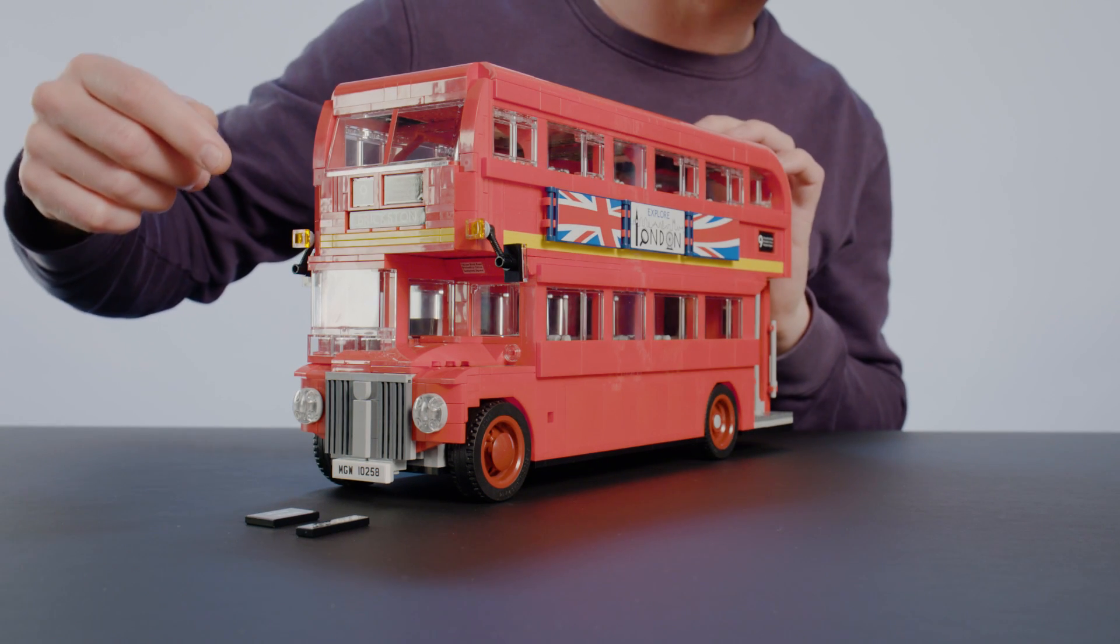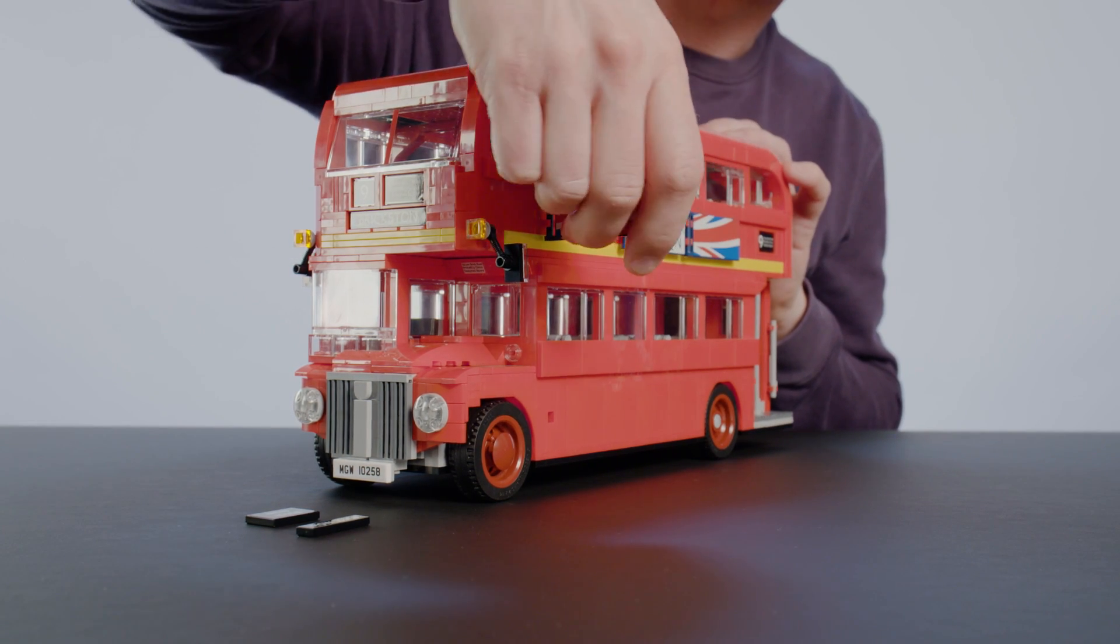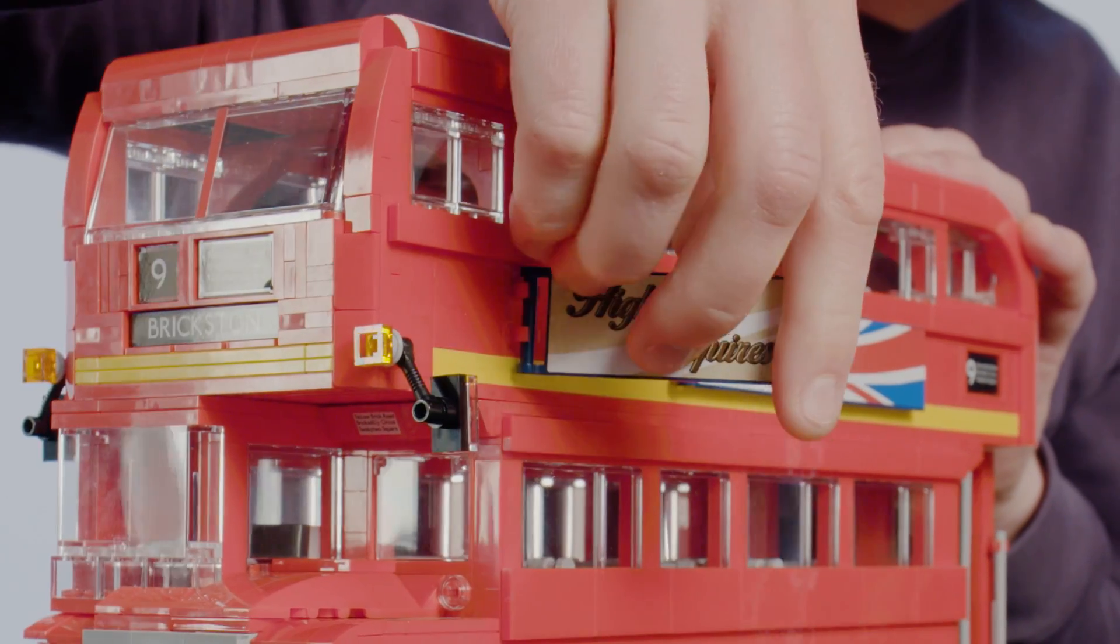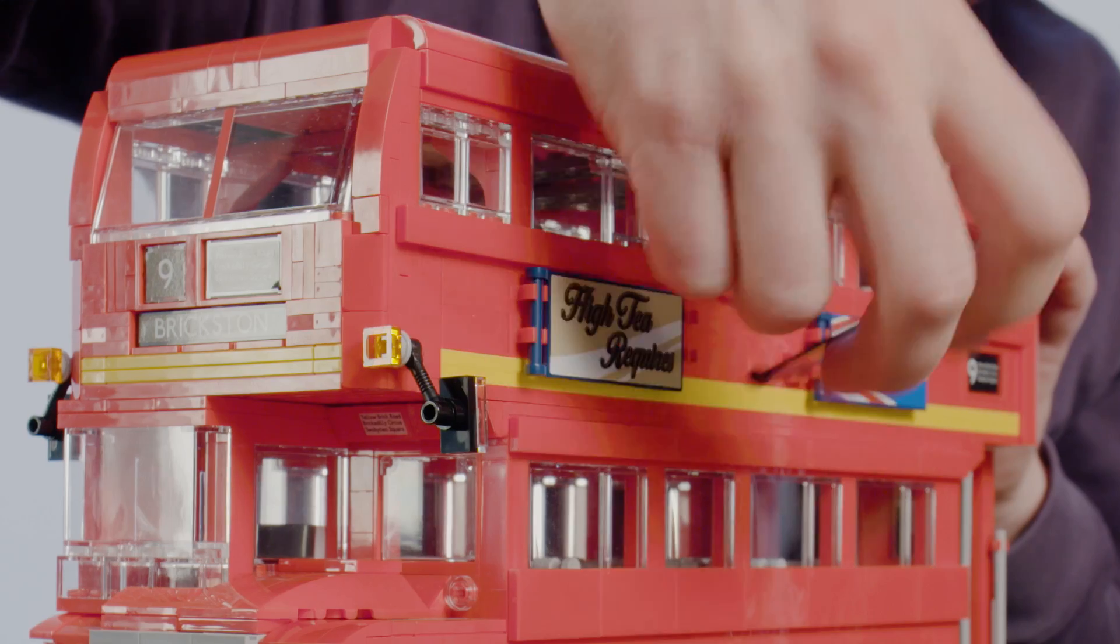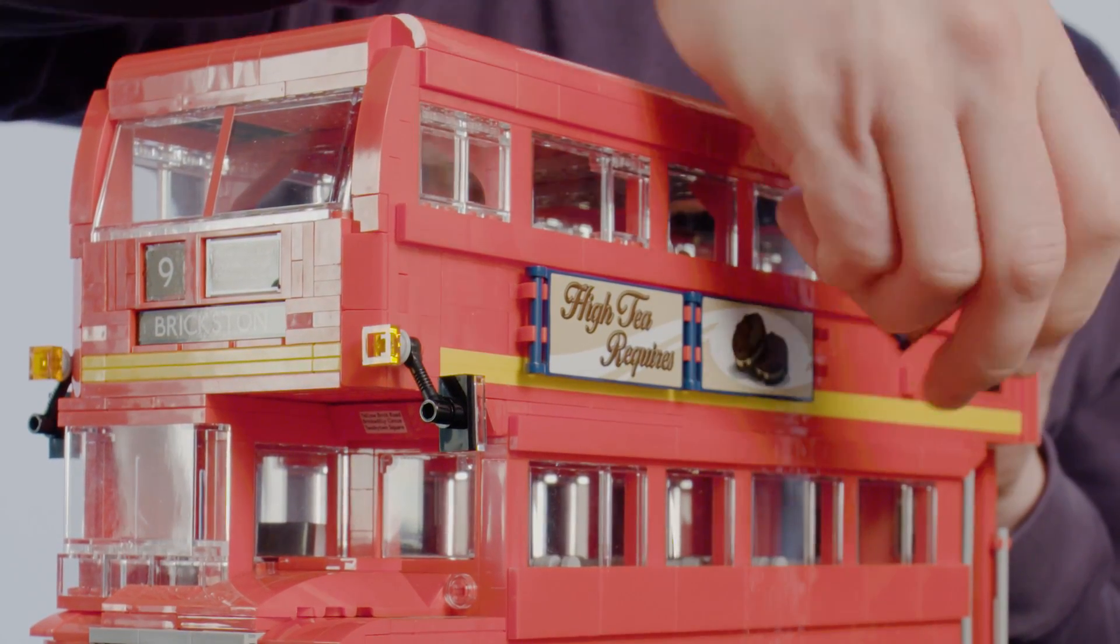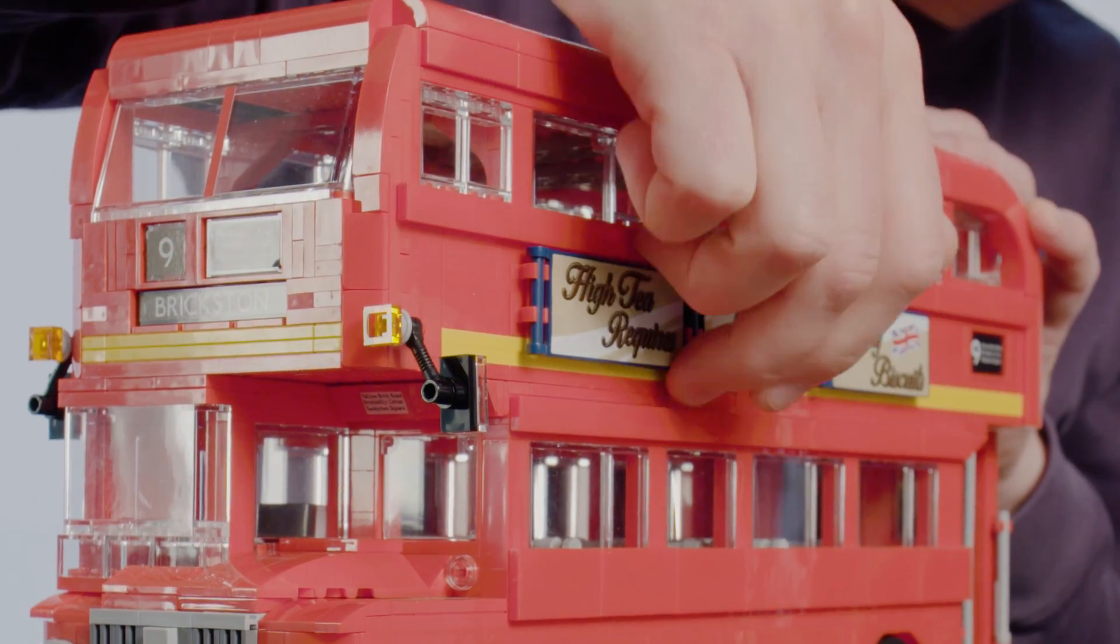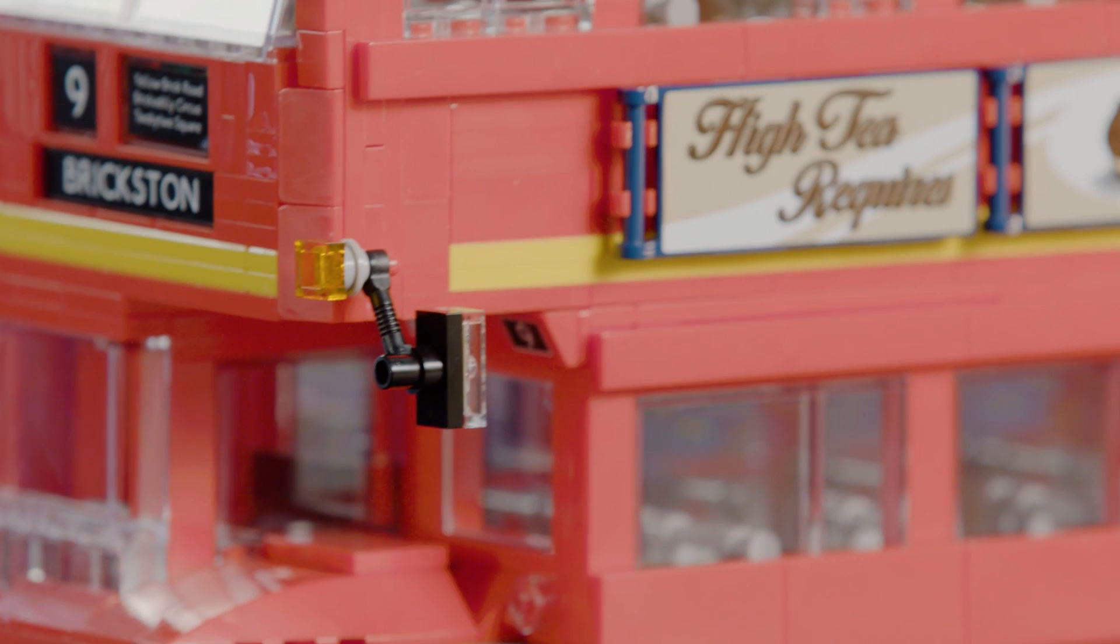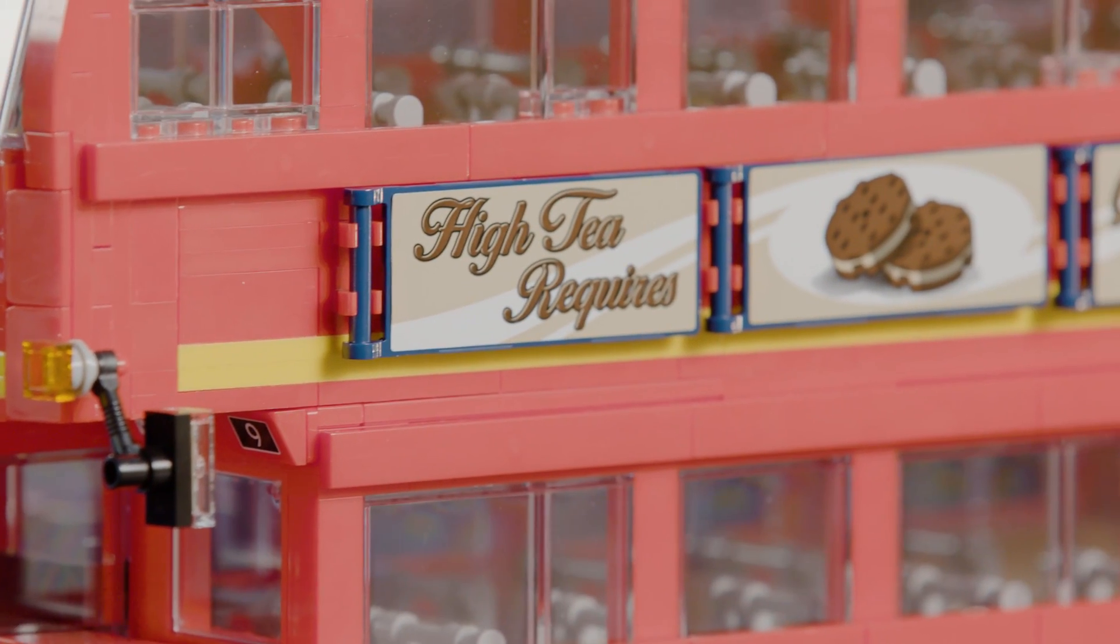You can actually change the side banners by turning them from this 'Explore London' theme to this more classic-looking biscuit commercial. So by doing that you get a more classic look on your bus.